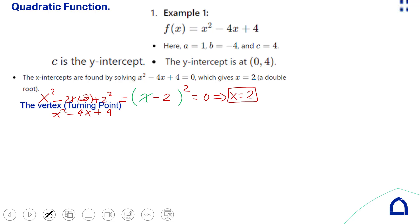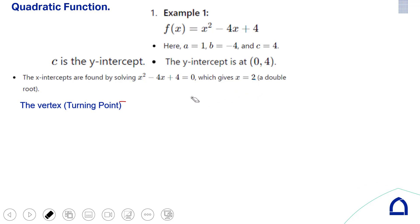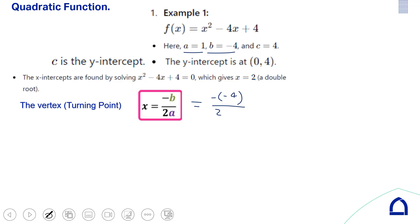To find the vertex, use the formula: x = −B / 2A. Here B is minus 4, so x = −(−4) / (2×1) = 4/2 = 2. Once you have x, substitute it back into the original function.